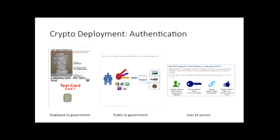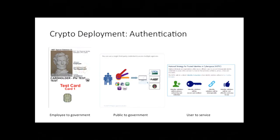The third piece is the most difficult from a policy standpoint: authentication of anybody to any service. We would like the government to be a catalyst for the development and deployment of something better than what we currently have. There's an effort called the National Strategy for Trusted Identities in Cyberspace. What the NSTIC effort has been trying to do is to be a catalyst for broader deployment of authentication. To put it bluntly, we'd like that to go faster.